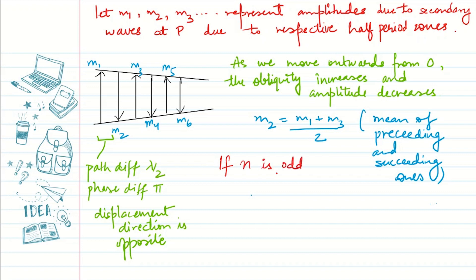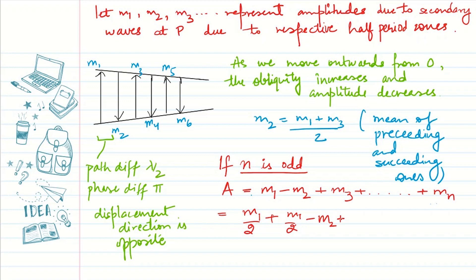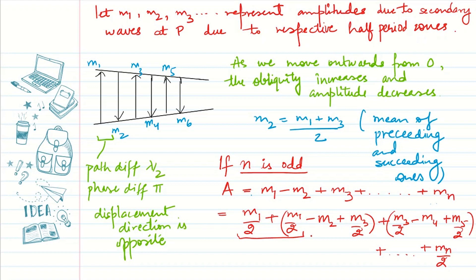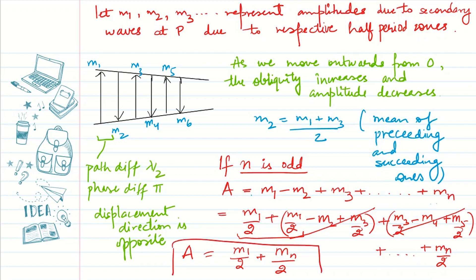If the number of Fresnel zones n is odd, the net amplitude is m1 − m2 + m3 − ... ± mn. We can rewrite m1 as m1/2 + m1/2, and bifurcate m3 similarly. Since m2 = (m1 + m3)/2, the middle terms all cancel out, and we are left with net amplitude = m1/2 + mn/2 for odd n.